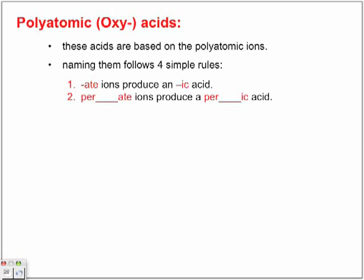Another one is if we're using the per-ate ion. What does that mean if we have the per-ate polyatomic? Exactly. We've added an oxygen to the original polyatomic. Now the name of it keeps the per, but we continue with the IC acid, and we put in whatever polyatomic name in that blank.